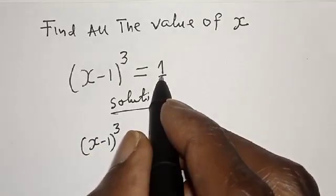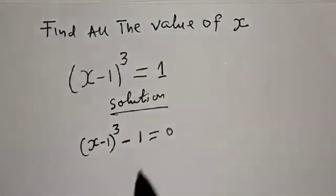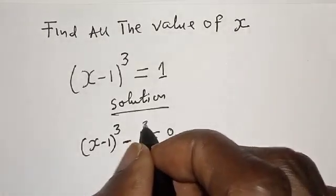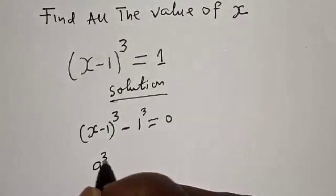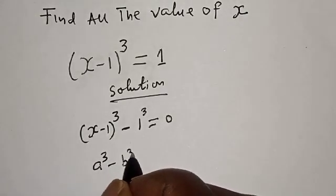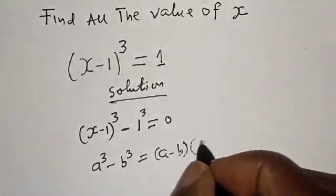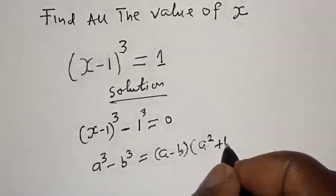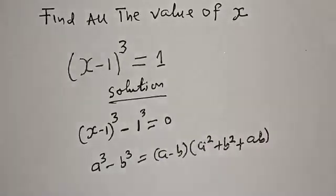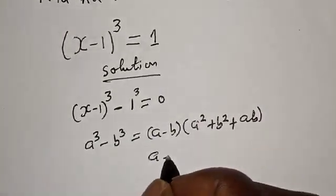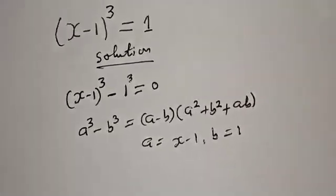We have s minus 1 raised to power 3. If you bring the 1 to this side it becomes minus 1 equals 0, and this is also 1 raised to power 3. Take note of this rule: if you have a raised to power 3 minus b raised to power 3, this equals a minus b, bracket, a squared plus b squared plus ab.